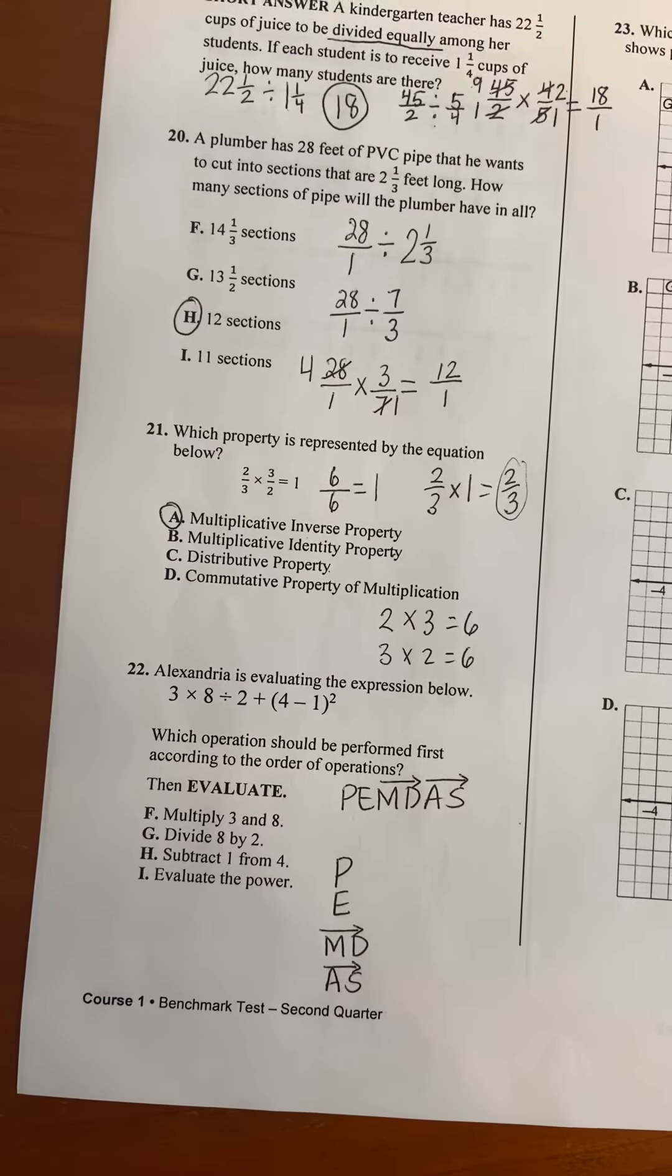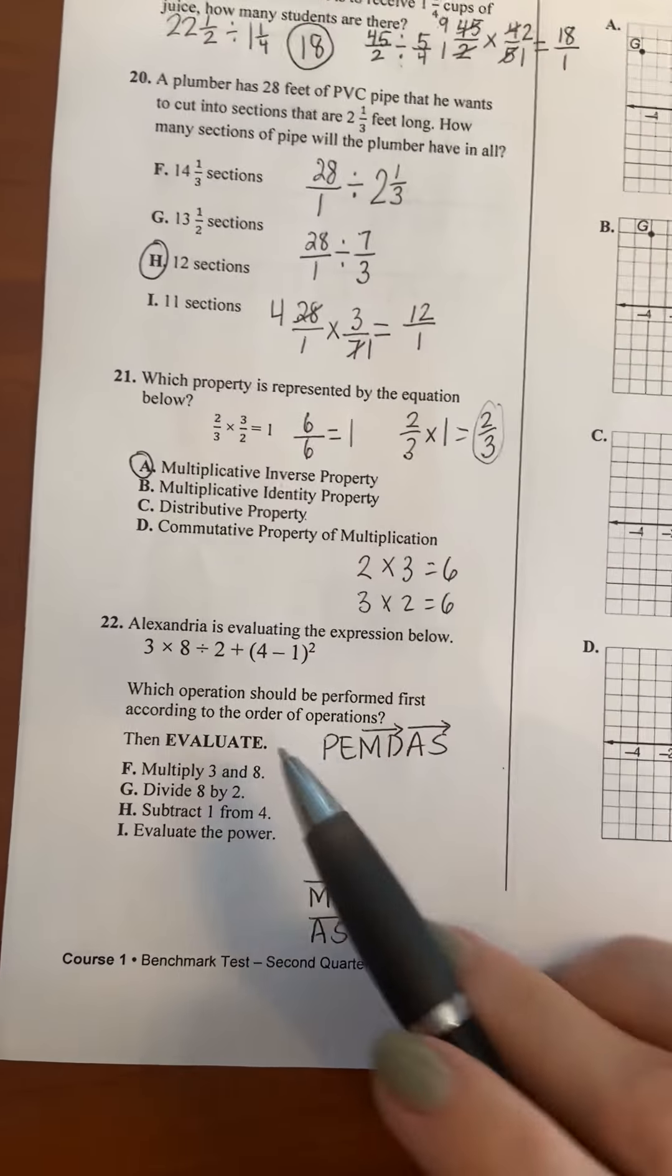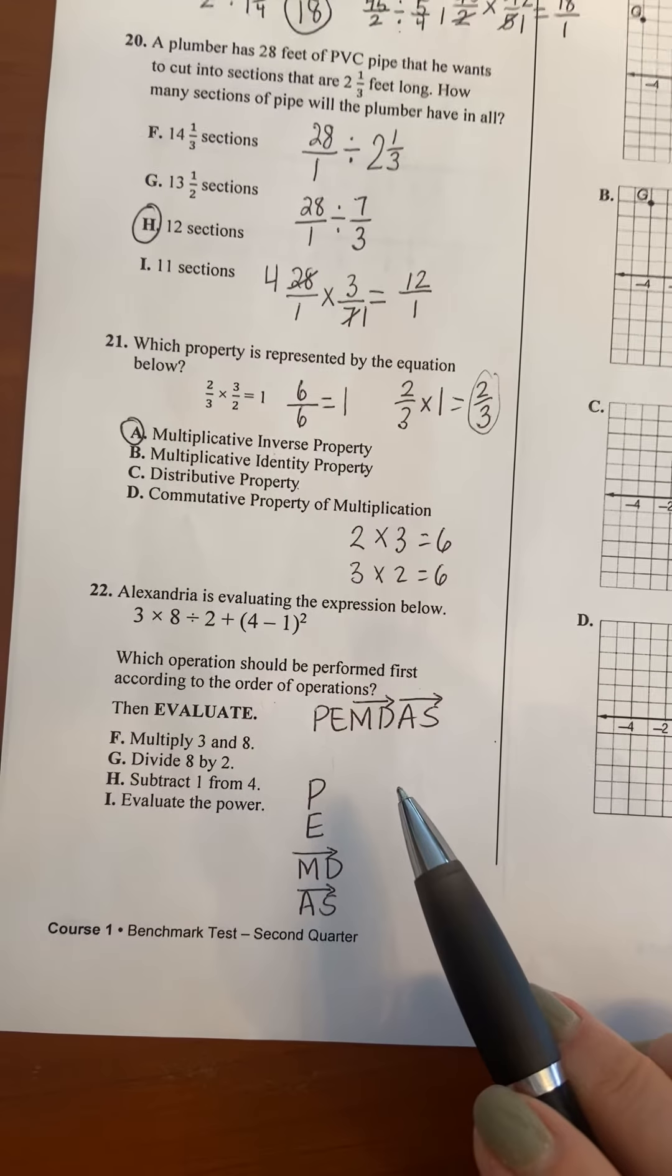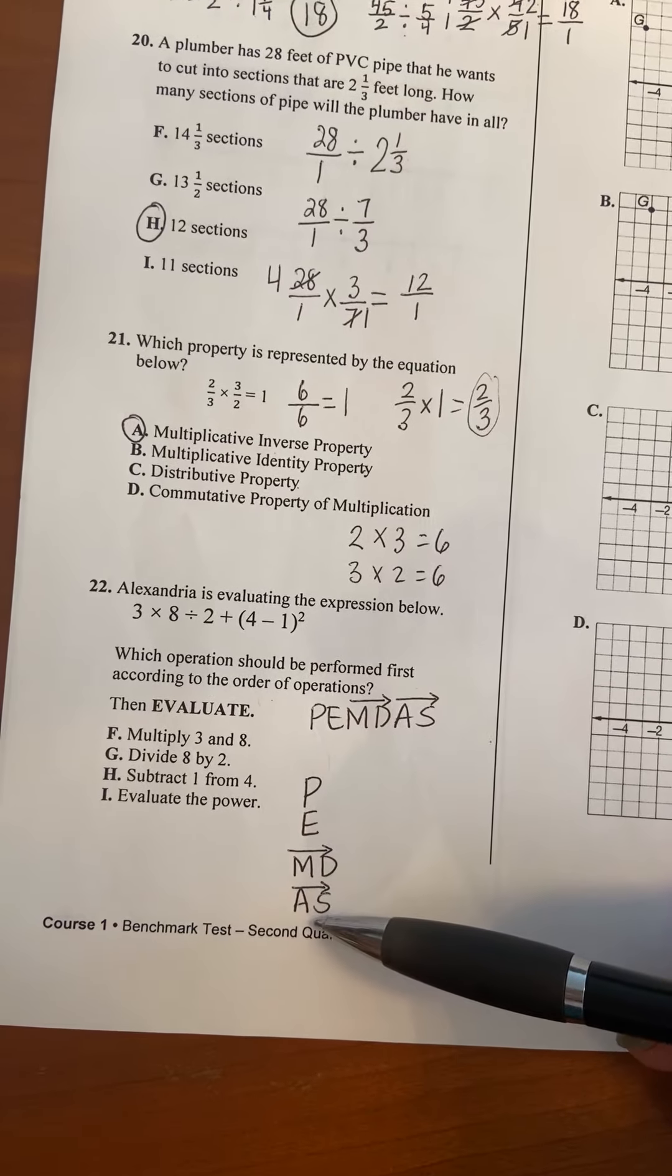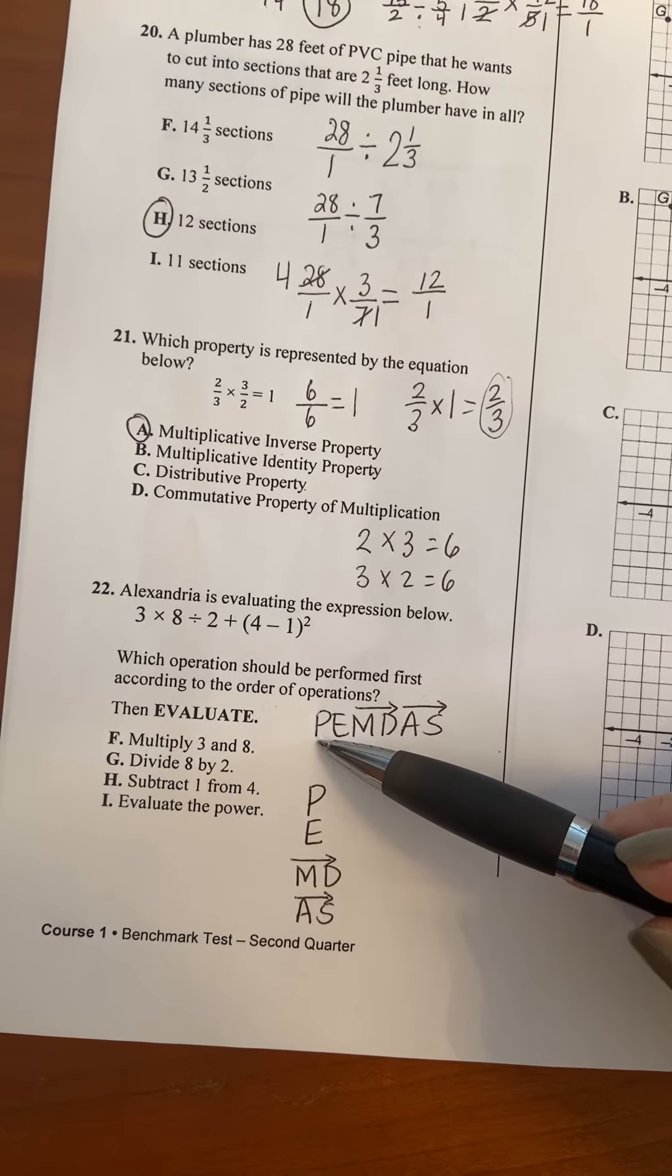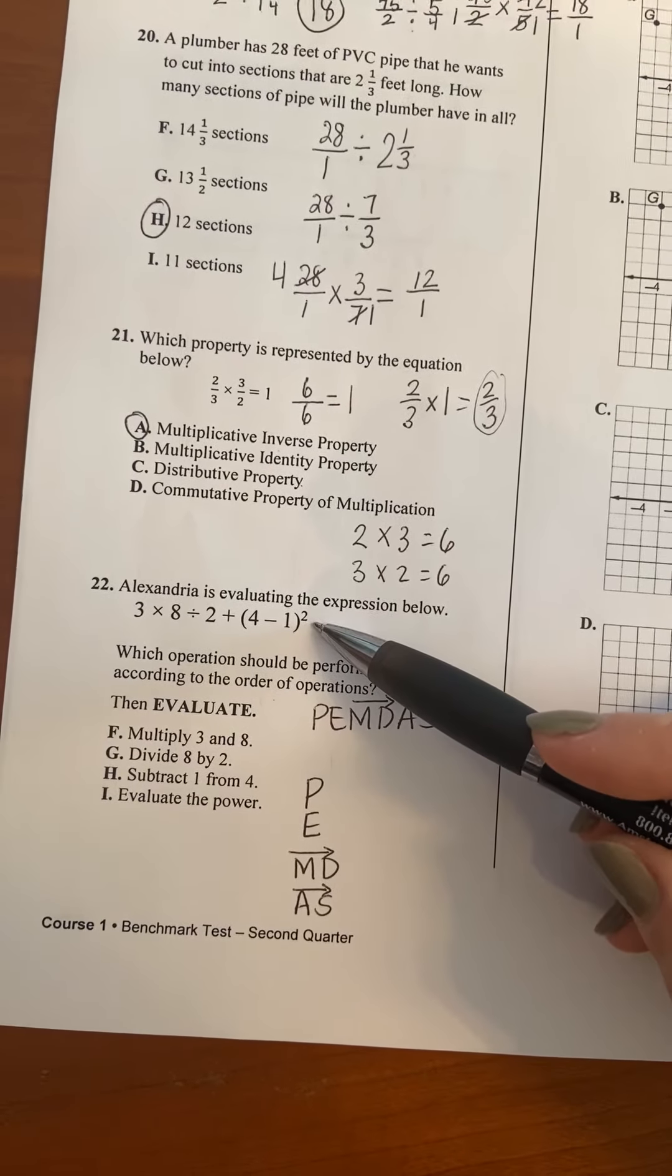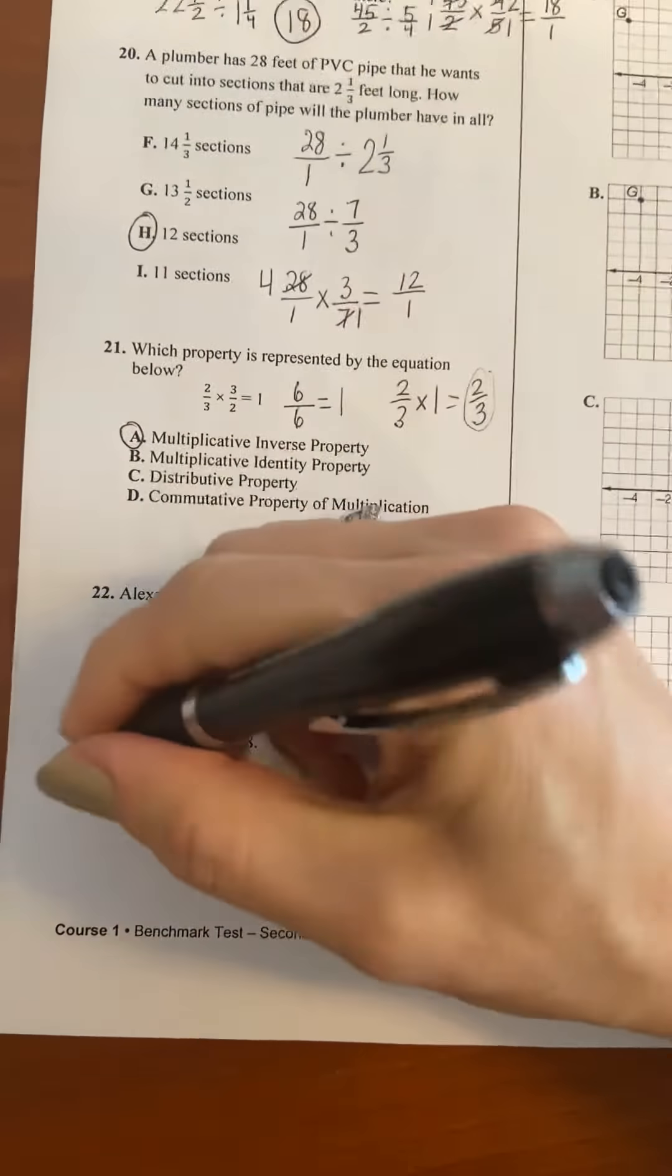22. Alexandria is evaluating the expression below, and I already put PEMDAS in here to save a little bit of time. Which operation should be performed first according to the order of operations? The order of operations, we use this word PEMDAS to help us remember the order. We've done it two ways. We've written it across the paper and we've also written it going down the paper, so you can do either one. But the P tells us the very first thing we should do are parentheses. So look at the parentheses. In those parentheses is 4 minus 1. That's the first thing we would do to solve this expression. So look at the choices, and I see here H says subtract 1 from 4, so that's the first thing you would do following order of operations.